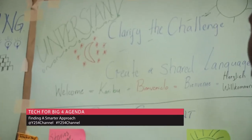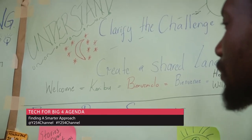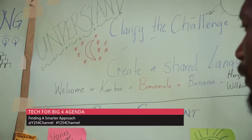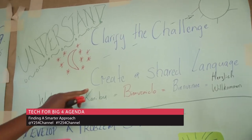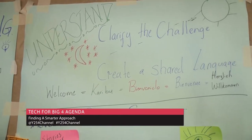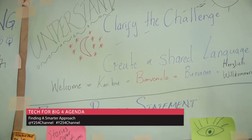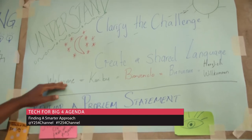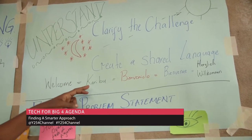The first step is understanding what the challenge is. You clarify exactly what the challenge is, because sometimes the person issuing the problem may think it's their problem, but it really isn't. As a collective, you come together to determine the actual problem and create a shared language or understanding. For example, the word 'welcome' may not be understood by everyone.